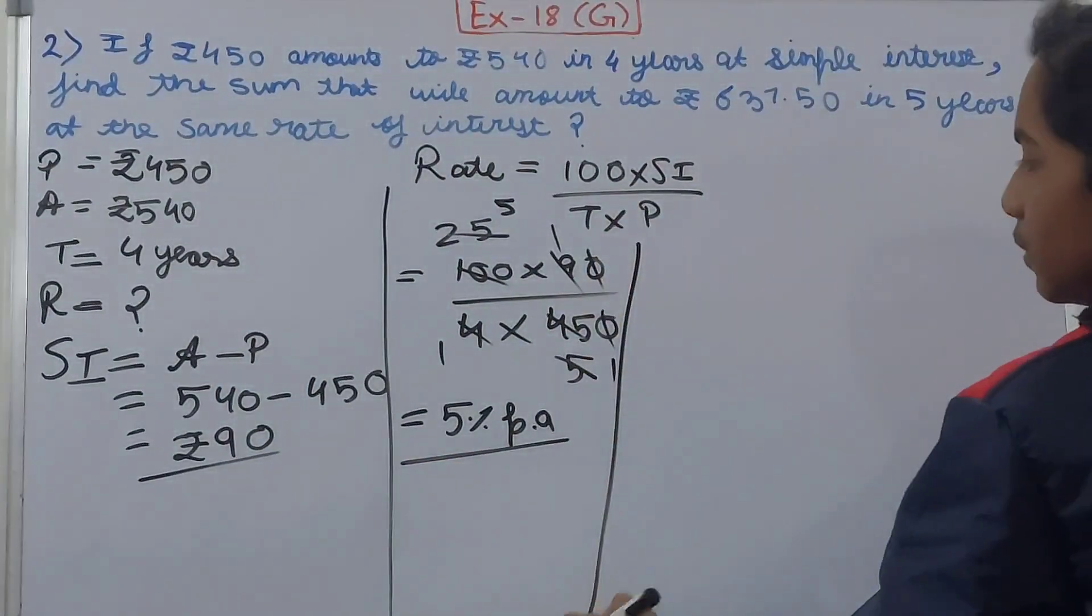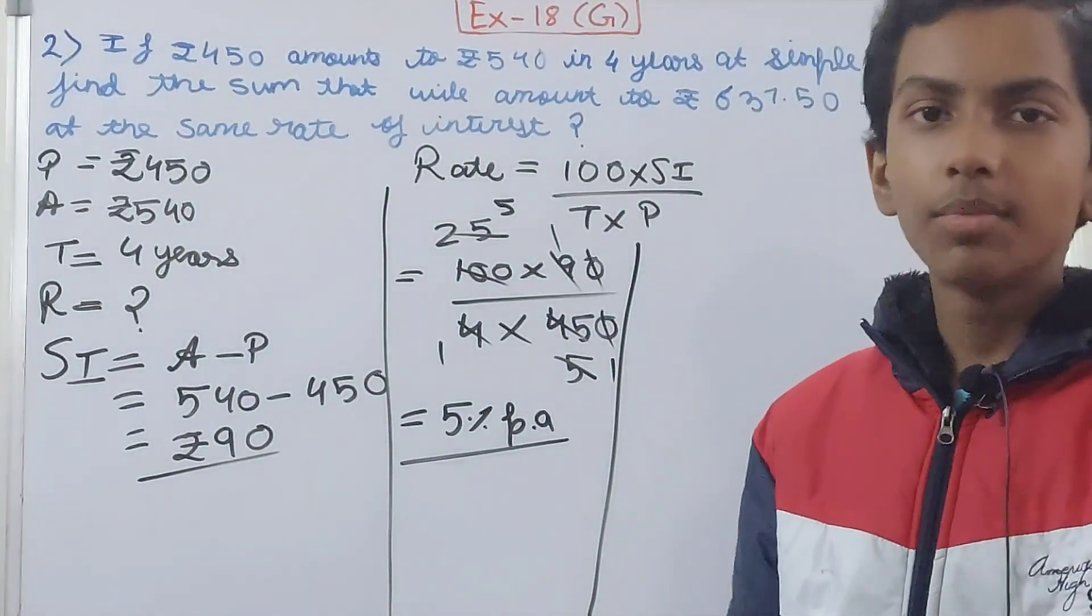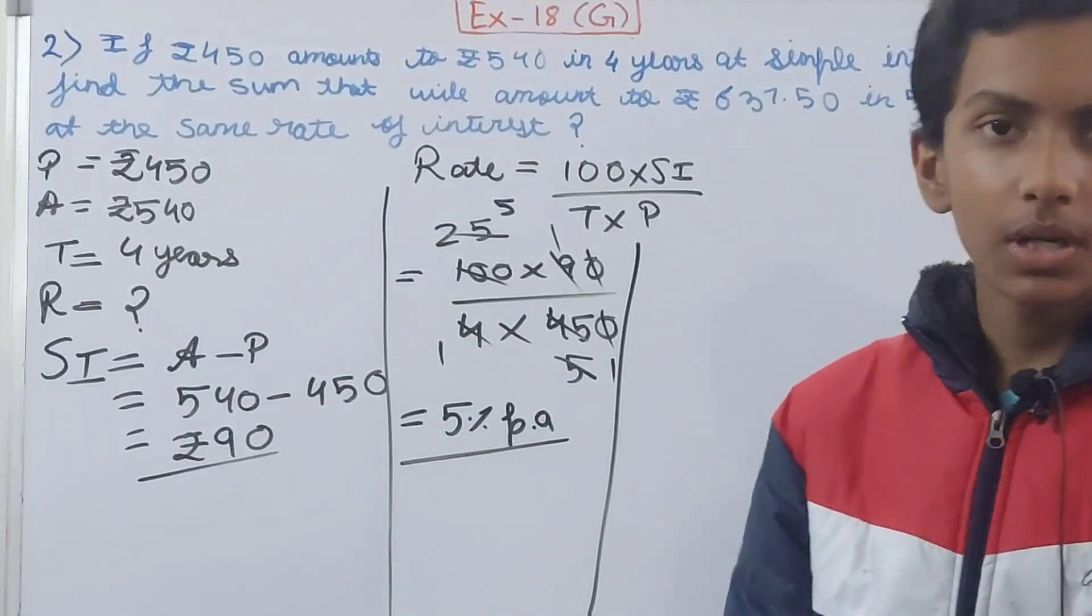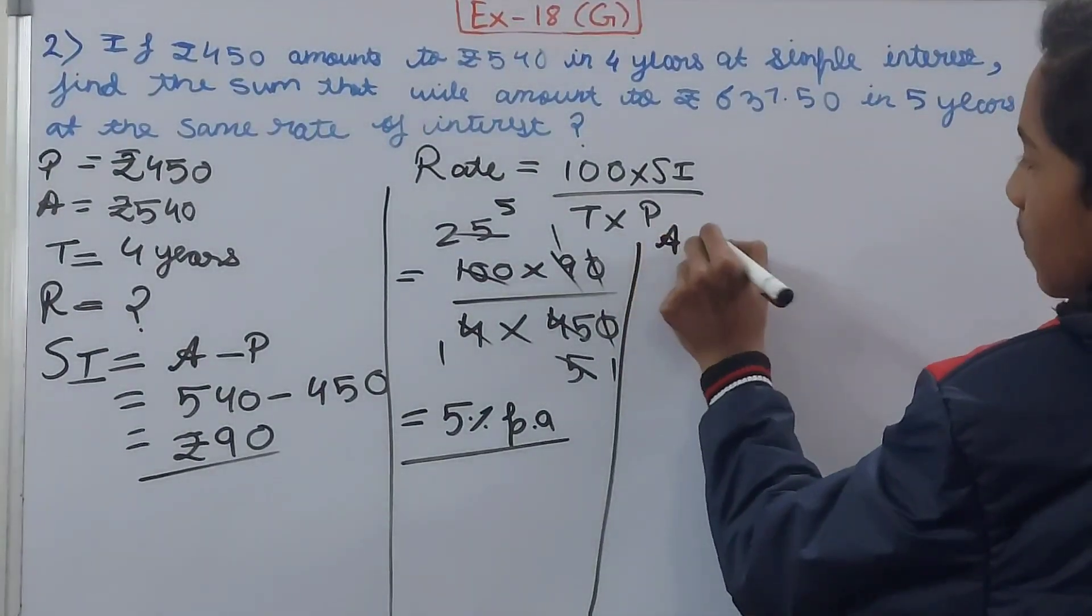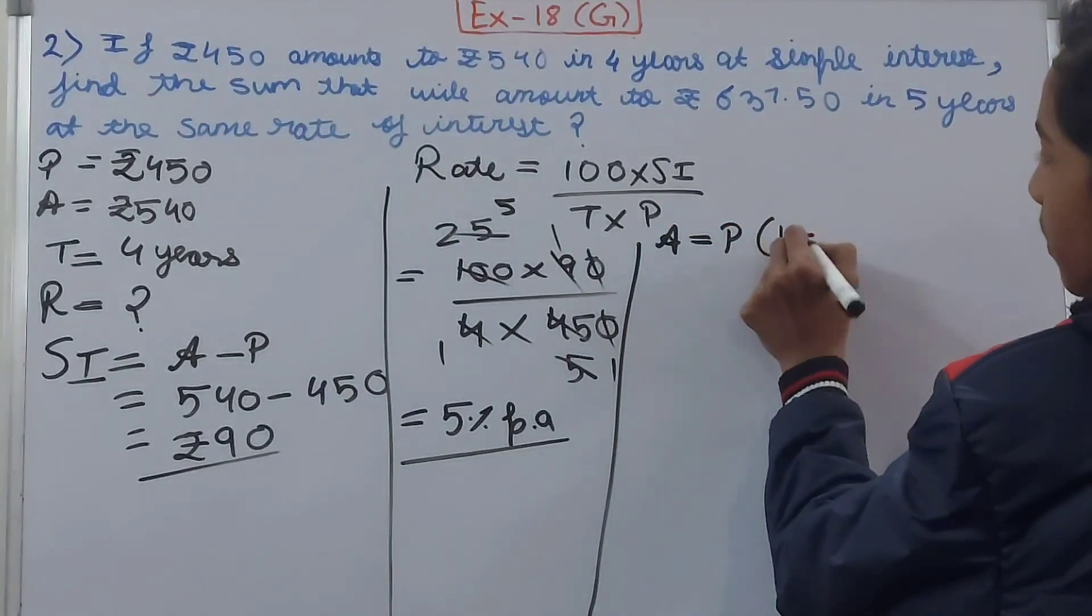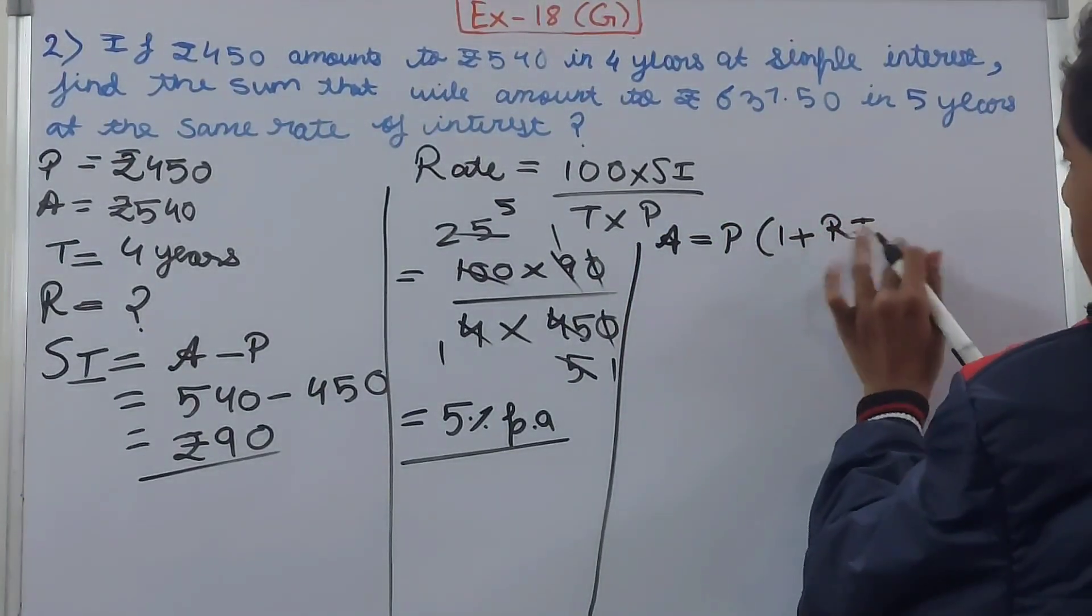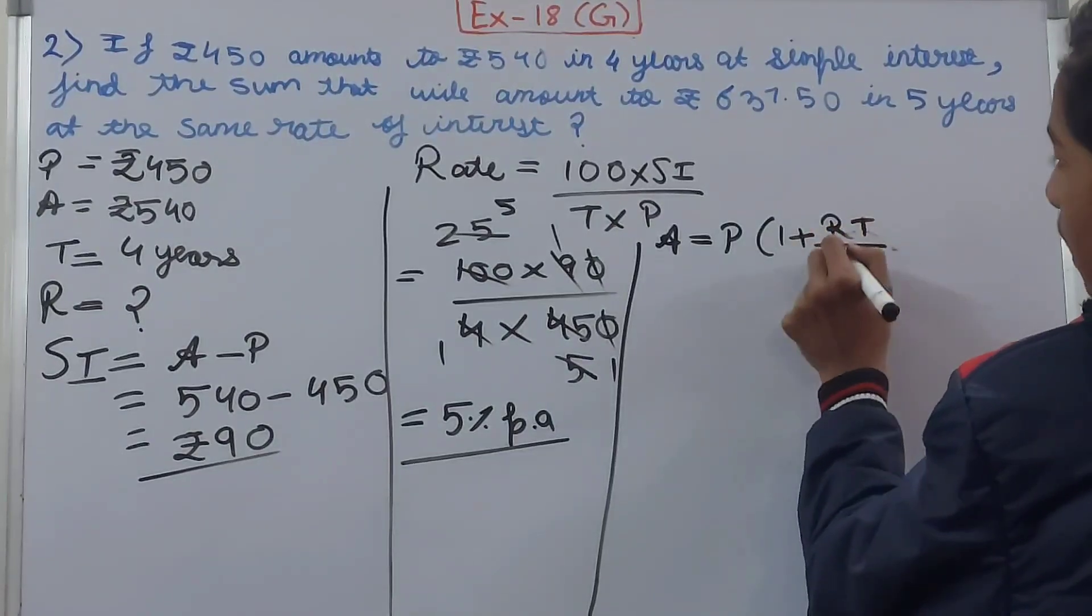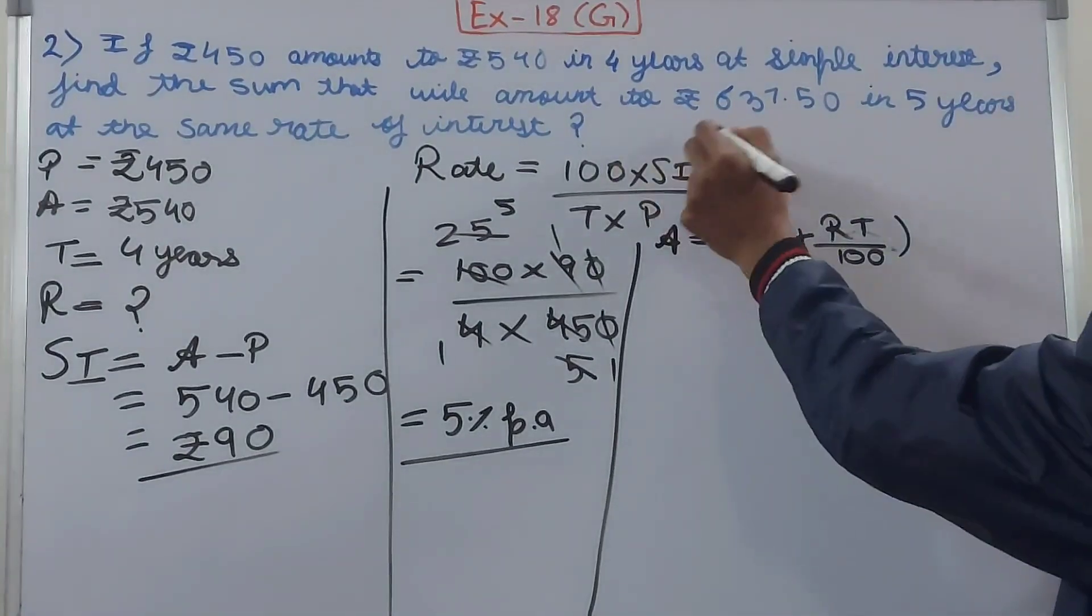We will use the formula of amount equals to: A = P(1 + RT/100). So the amount equals to principle times (1 + RT/100). So again substitute all of the values.